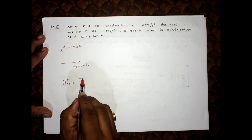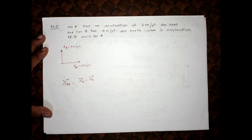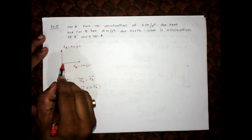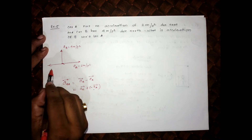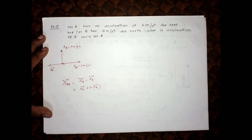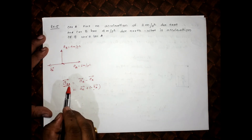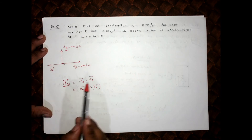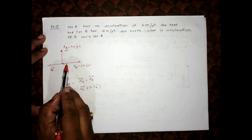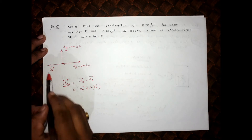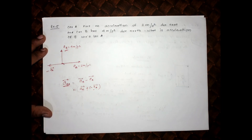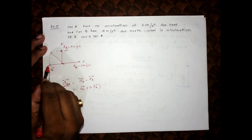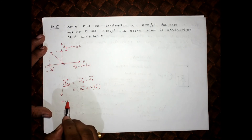Acceleration of B with respect to A equals acceleration of B minus acceleration of A. This means we add the vector acceleration of B to the negative of acceleration of A. Since acceleration of A is eastward, minus of A is westward. Using the parallelogram law to add these two vectors, the resultant direction is in the northwest direction.